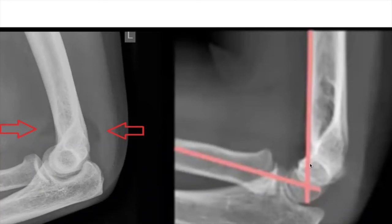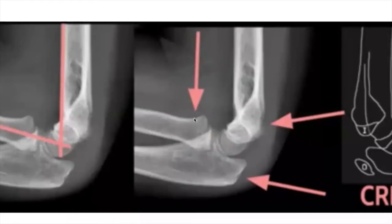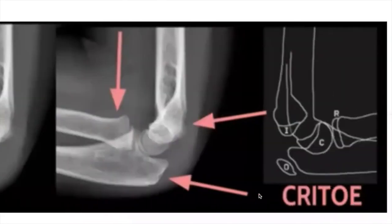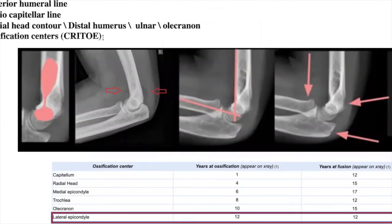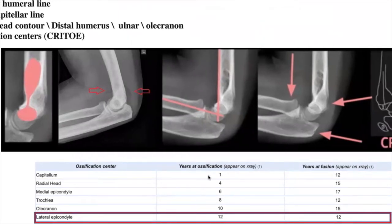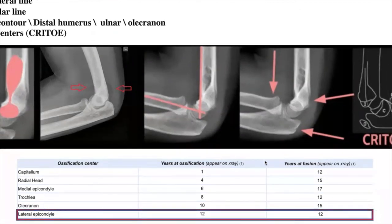If the capitellum is not intersecting with the anterior humeral line or the radiocapitellar line, suspect a specific fracture. Also assess the bone: look at the head of the radius, the distal humerus, the capitellum, the olecranon, and the ulna. The ossification centers can be memorized using the mnemonic CRITOE — Capitellum, Radial head, Internal (medial) epicondyle, Trochlea, Olecranon, and External (lateral) epicondyle — each with a specific age of ossification and fusion, so you don't misdiagnose them as fractures.